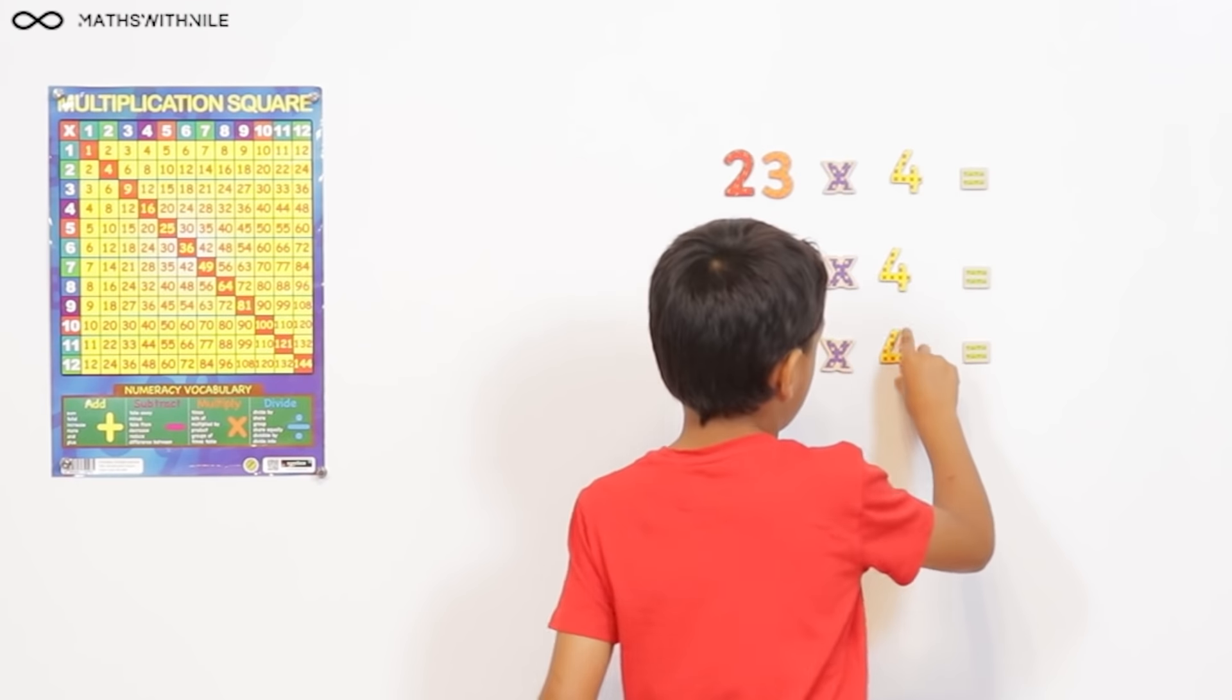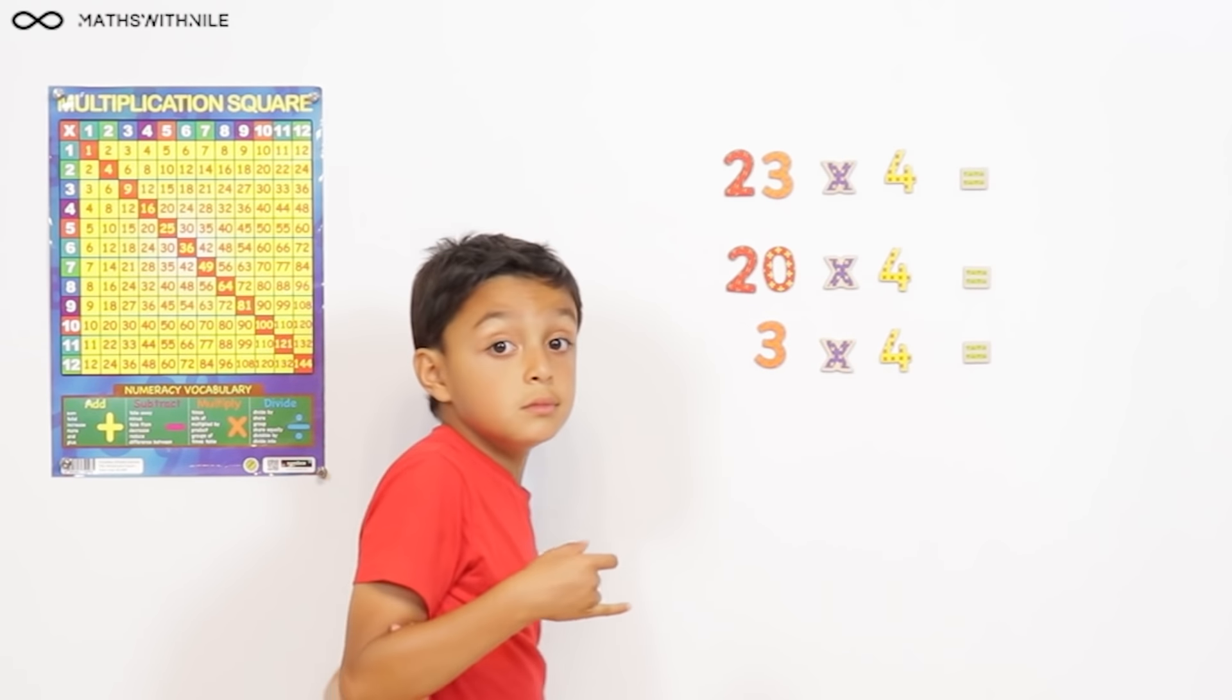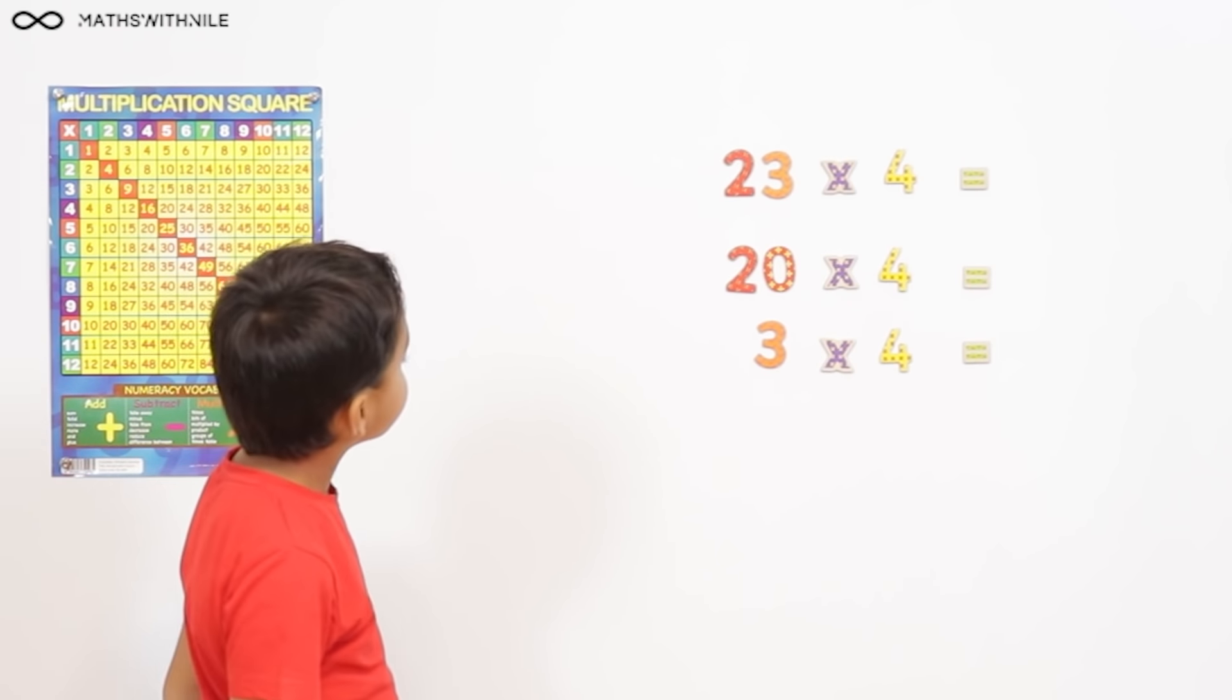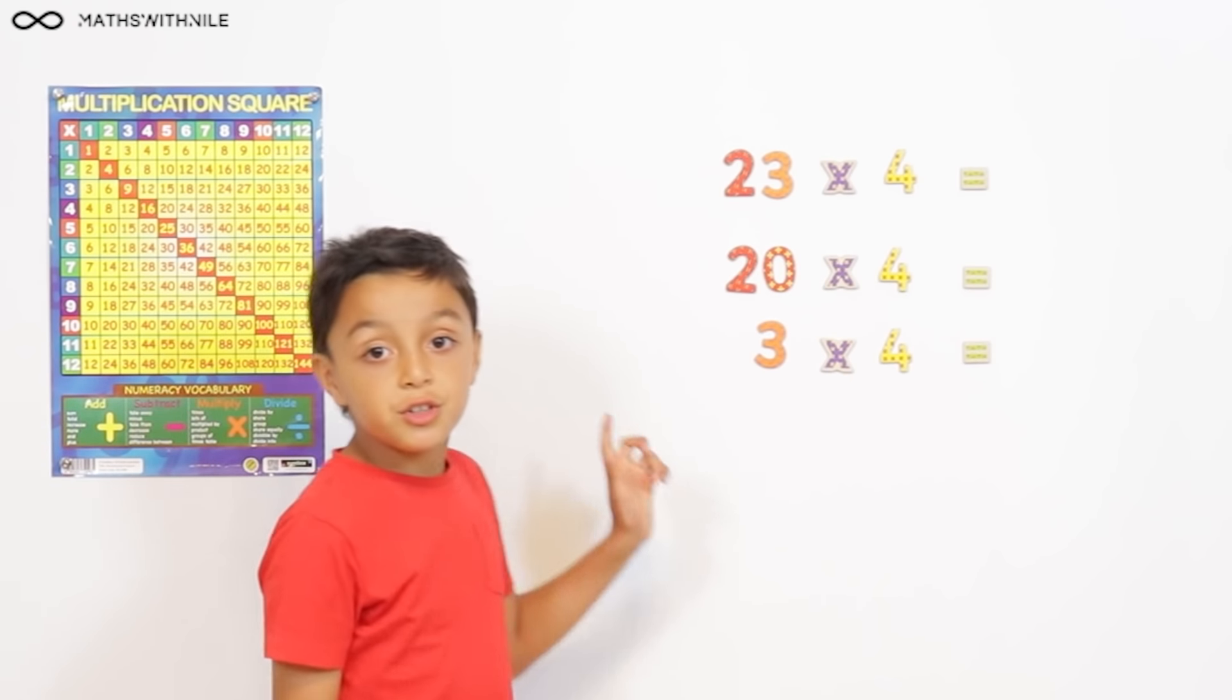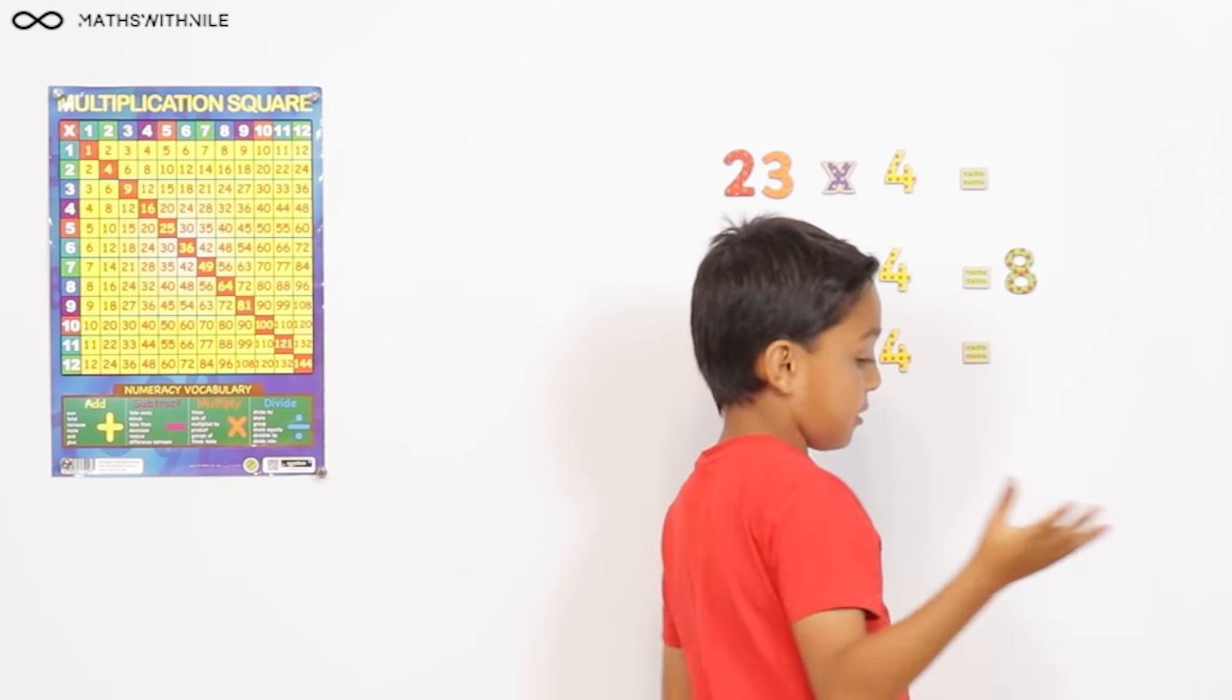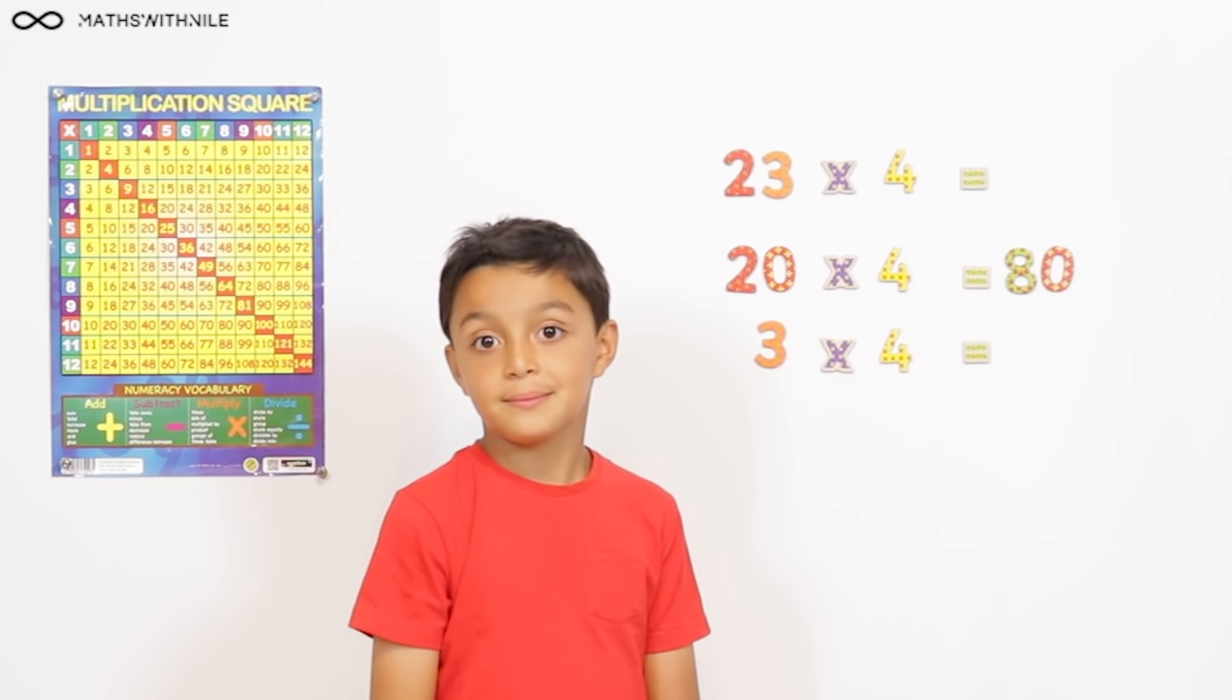So, stand to the side and let's have a look. So, what we're actually doing, Niall, is 23 times 4 is the same as 20 times 4 plus 3 times 4. So, can you use the rules that we've learned to work out 20 times 4? Explaining. So, 2 times 4 equals 8. Yes. And then just add the 0. So, it equals 80. Very good. And what's 3 times 4? 3 times 4 is 12.